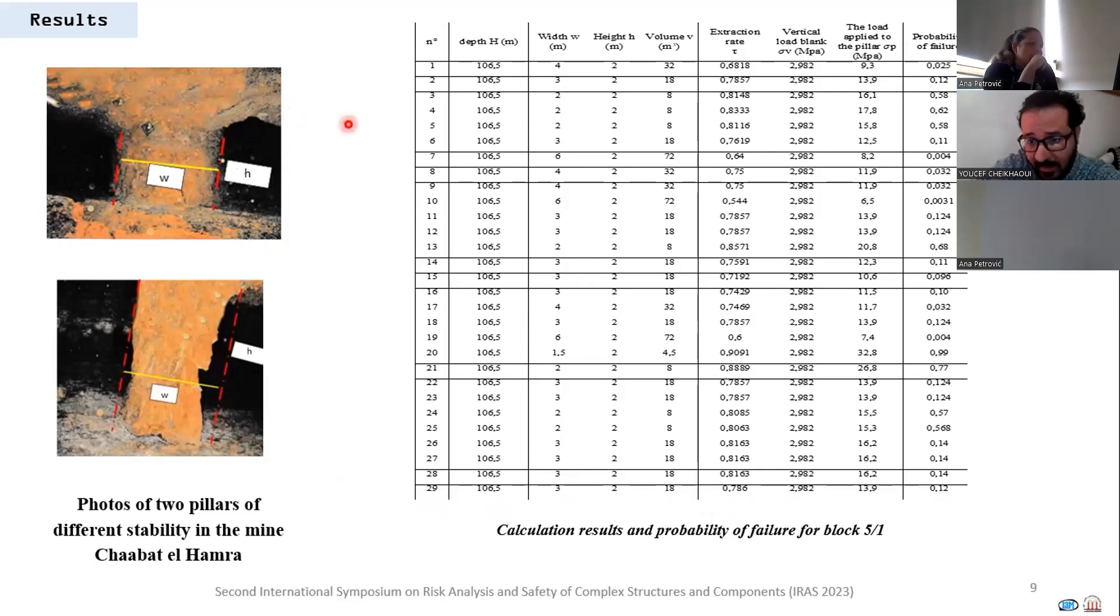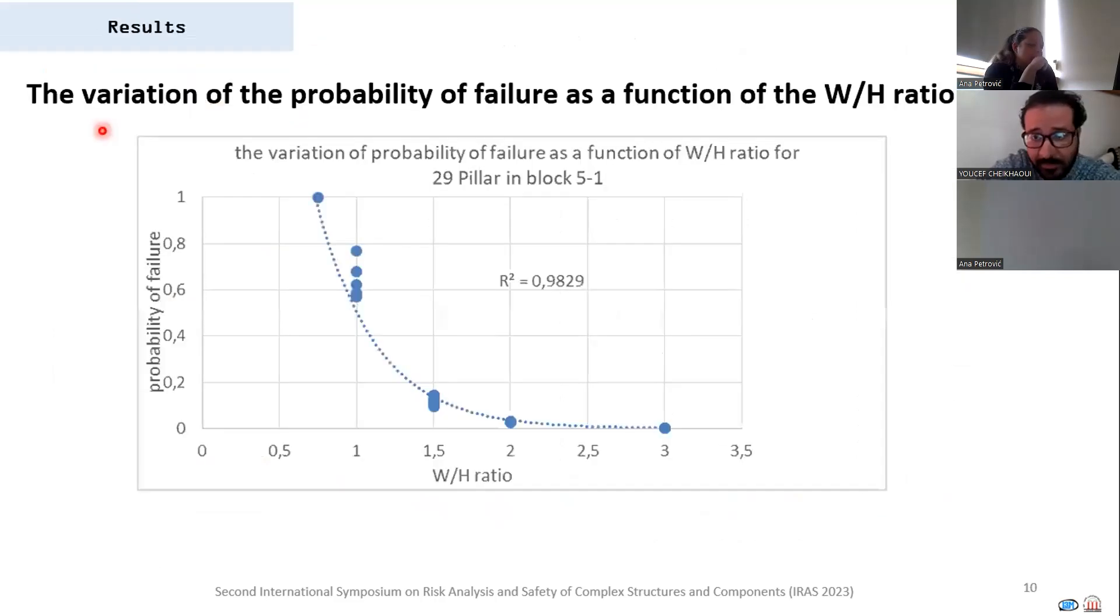The curve in the figure clearly shows the decrease of the probability of failure with the increase of W/H ratio.